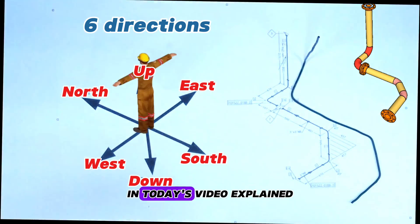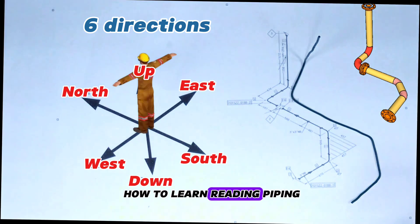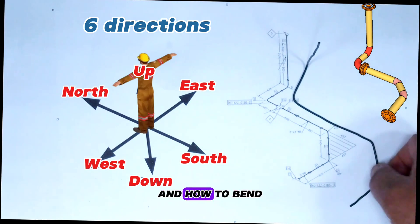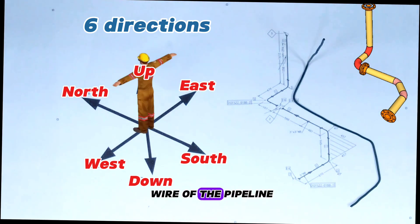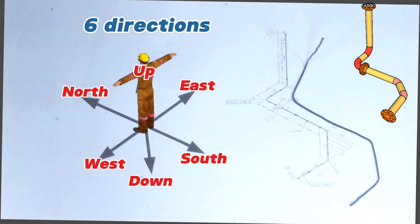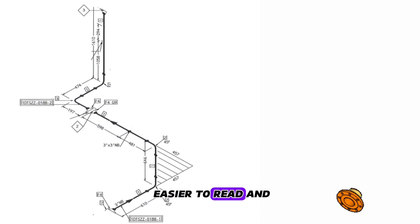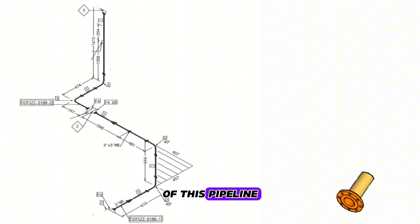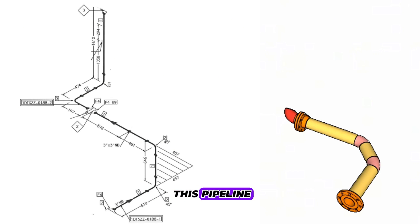In today's video we explained how to read piping isometric drawings using an easy method and how to bend wire of the pipeline as per the isometric drawing. It will now be easier to read and understand the isometric drawing of this pipeline by watching the 3D view animation clip. See you next time, guys. Bye.